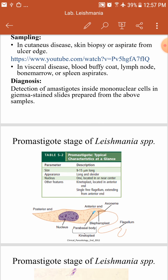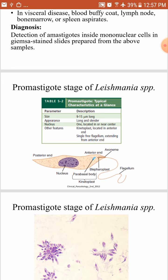After taking a sample from the patient, we put the slide under the microscope and stain it with Giemsa stain, looking for amastigotes. The presence of amastigotes on the slide diagnoses Leishmania. We look for amastigotes inside mononuclear cells in Giemsa-stained slides prepared from the above samples.